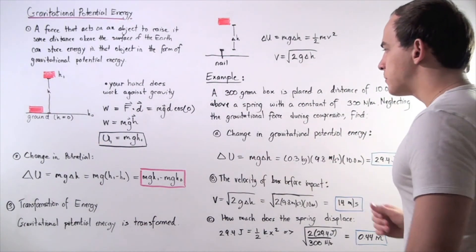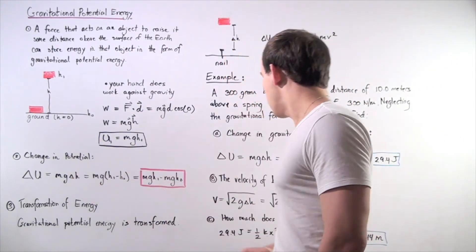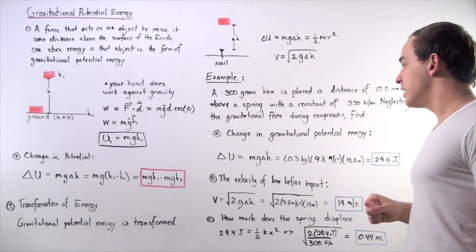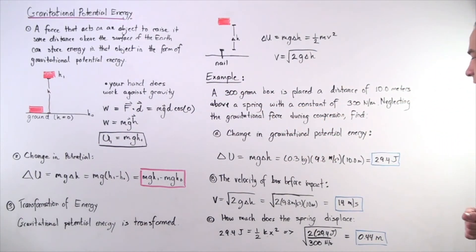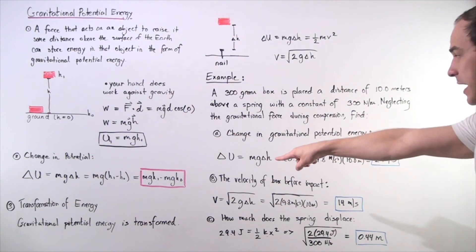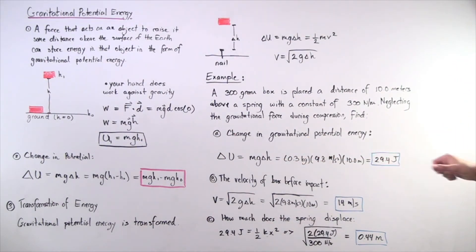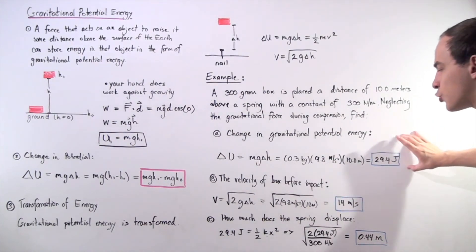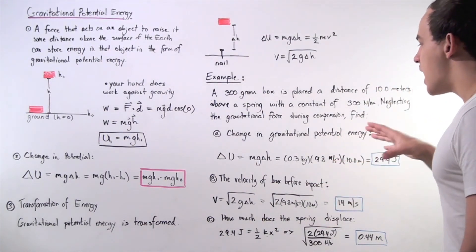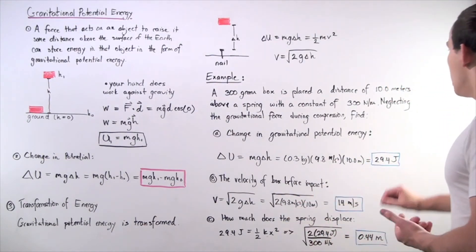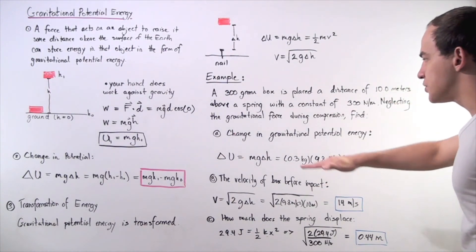The change in gravitational potential energy is given by mg·Δh. Mass is 0.3 kilograms, g is 9.8 meters per second squared, and the change in h is 10 meters. Plugging that in, we find a change in gravitational potential energy of 29.4 joules. This is how much energy is transformed into kinetic energy when the object falls that distance.